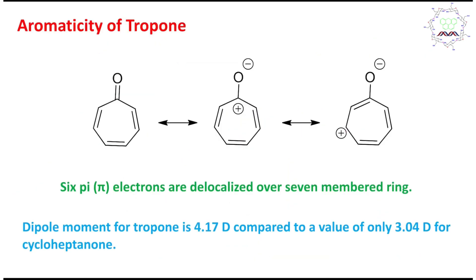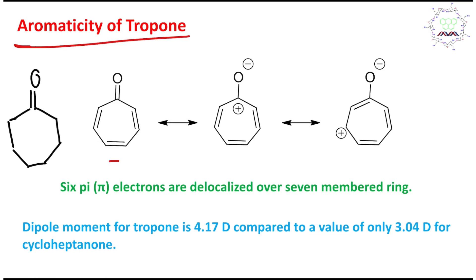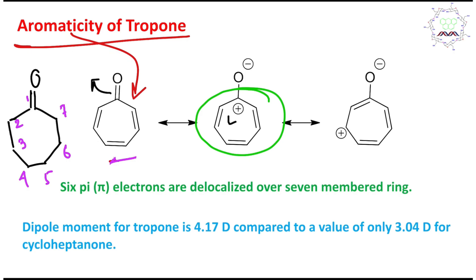Some additional information: the aromaticity of tropone. Tropone is actually aromatic. If you look at its canonical charge-separated form, the seven-membered ring has six pi electrons in a cyclic, planar, conjugated system. Based on Hückel's rule, this is aromatic. Because of this charge-separated aromatic structure, tropone has a significantly high dipole moment of approximately 4.17 Debye.